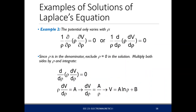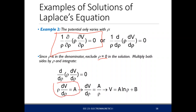Another example is when potential only varies with rho — this is your coaxial cable. The Laplace's equation becomes this expression. Since rho is in the denominator, we exclude rho equal to 0 from the solution because the expression blows up there. Multiplying both sides by rho and integrating gives a constant A. Cross-multiplying and integrating again yields the scalar potential function V equal to A ln(rho) plus B.